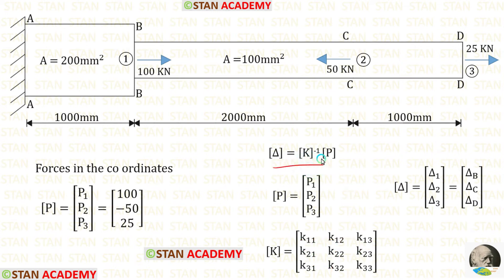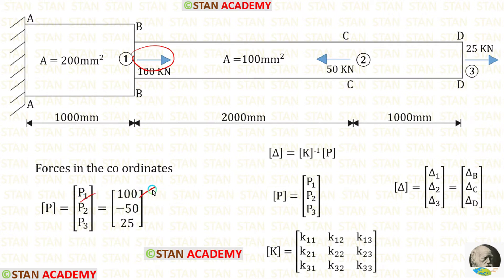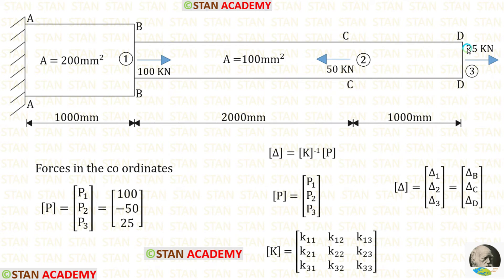In this formula, first let us find the P matrix. P matrix is the forces in the coordinates. In the first coordinate we have the load 100 kilo Newton, so P1 is 100 — since it is acting towards the right side we apply it as positive. In the second coordinate we have the load 50 kilo Newton, so P2 is negative 50, since it is acting towards the left side. In the third coordinate we have the load 25 kilo Newton, and since it is acting towards the right side we apply that as positive.